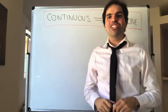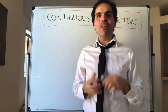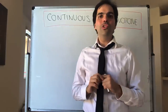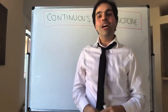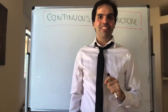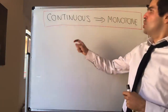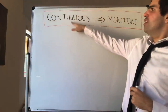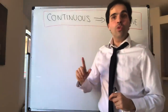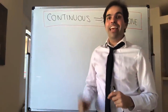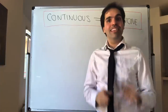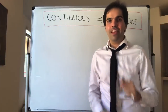All right, thanks for watching. Today I want to tell you about a fact that's not only too good to be true, but it is too good and it is true. Namely, I want to show you that if you have a continuous function that is one-to-one, then in fact it's either strictly increasing or strictly decreasing.